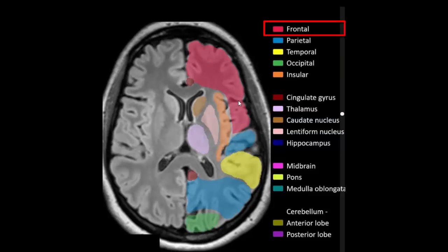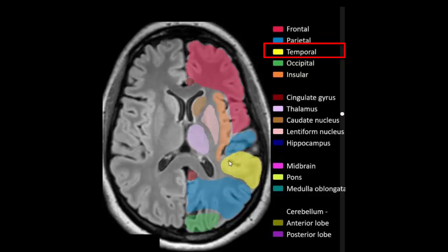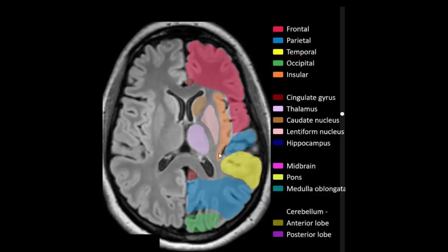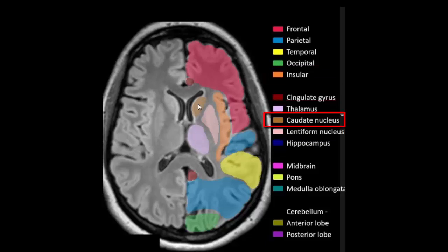Frontal lobe, parietal lobe, temporal lobe, occipital lobe, insular cortex, lentiform nucleus, thalamus, head of caudate nucleus. Right and left anterior horn of lateral ventricle.